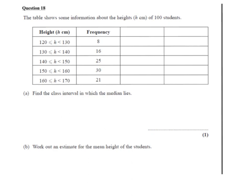Now there's 100 students, so we're looking for where the 50th student lies. If we look at the frequencies, we can see that 8 students are in the first frequency interval. Another 16 are in the next interval, so that's 24 students. We now have another 25 which takes us up to the 49th student in the 140 to 150 interval. So we haven't got the 50th yet. The 50th will come in the next 30.